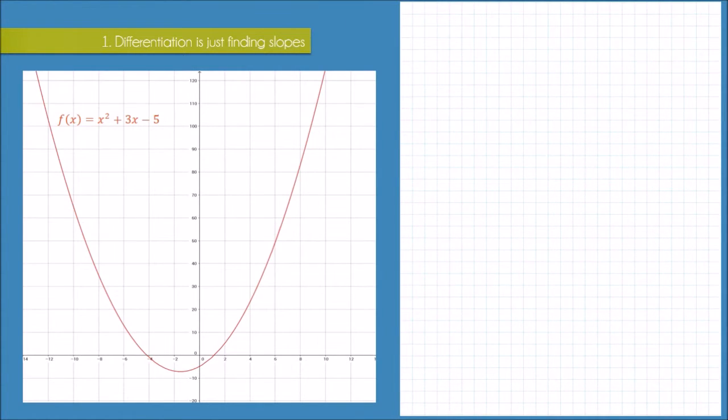All right, so you might be thinking to yourself, finding the slope of a linear function is fine, but what if I need to differentiate a quadratic function or a cubic function or any function that isn't just a straight line? How do you find the slope of a curve? And what does the slope of a curve necessarily mean?